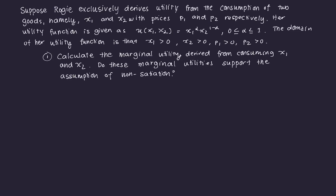In this problem, suppose we have a consumer — her name is Roji — and she exclusively derives utility from the consumption of two goods: good one (X1) and good two (X2), with prices P1 and P2. Her utility function is given as U = X1^α · X2^(1−α), where α lies between zero and one. The domain requires all quantities and prices to be strictly positive. This is called the Cobb-Douglas utility function, which we'll be using throughout the series.